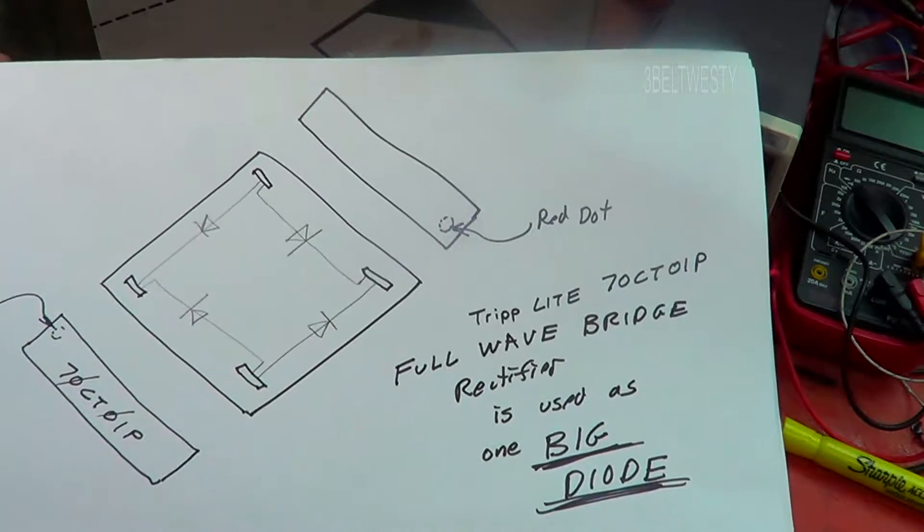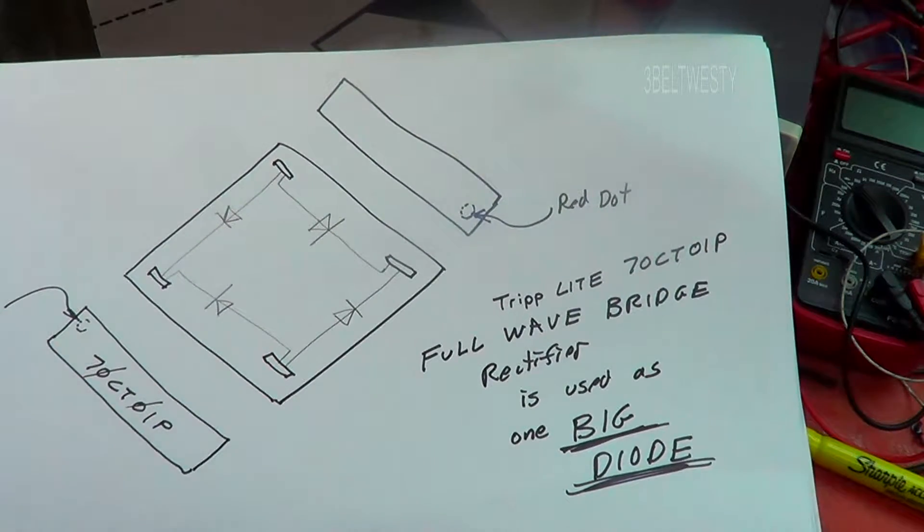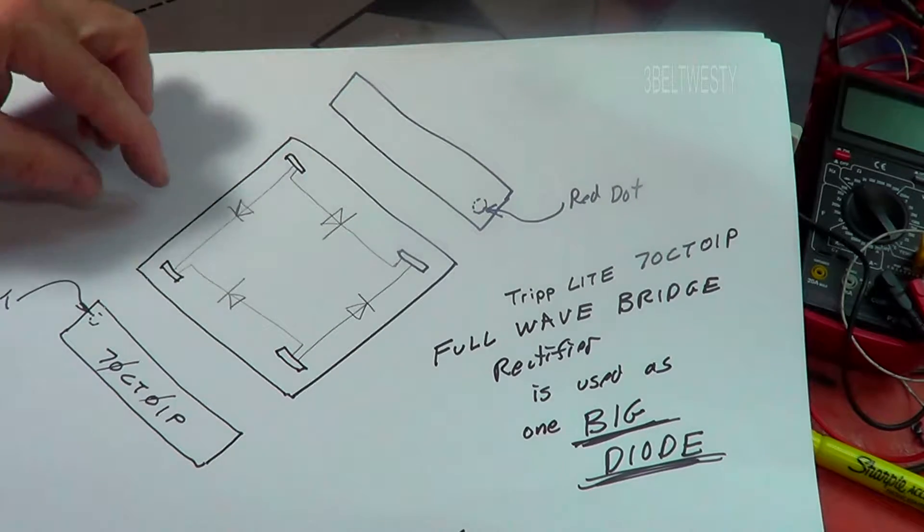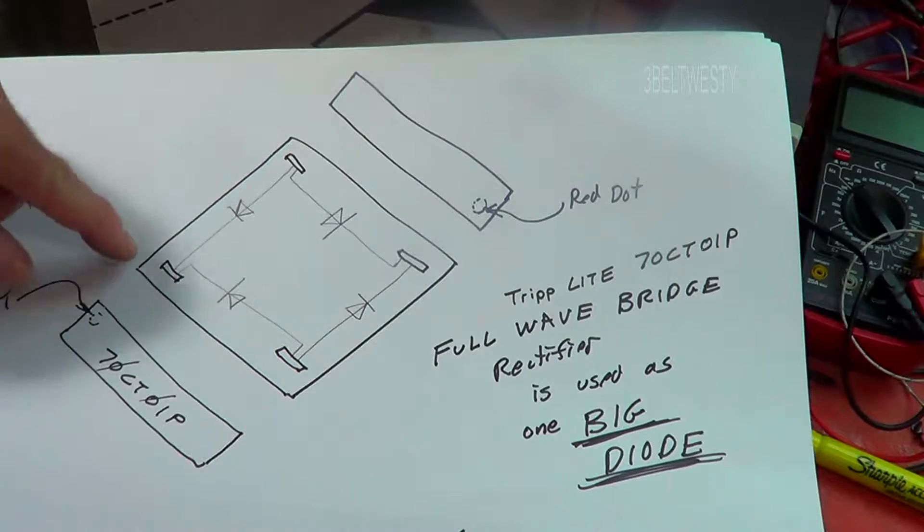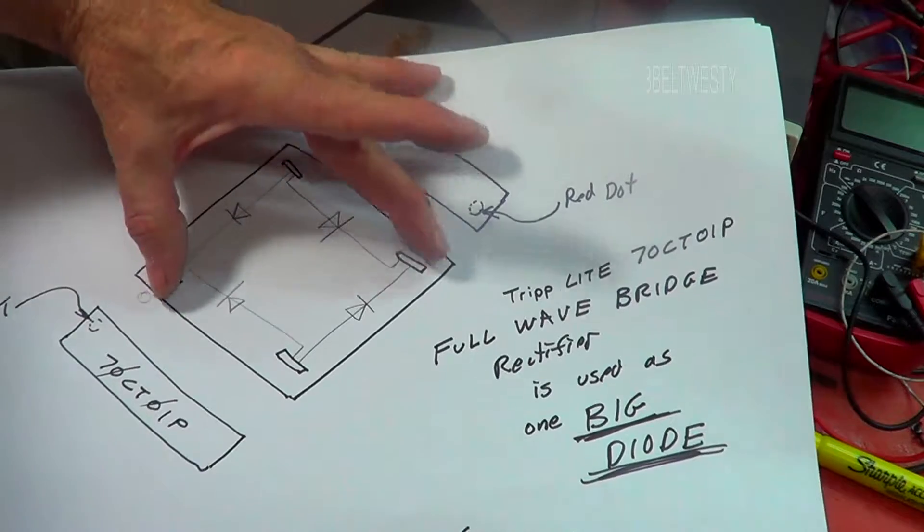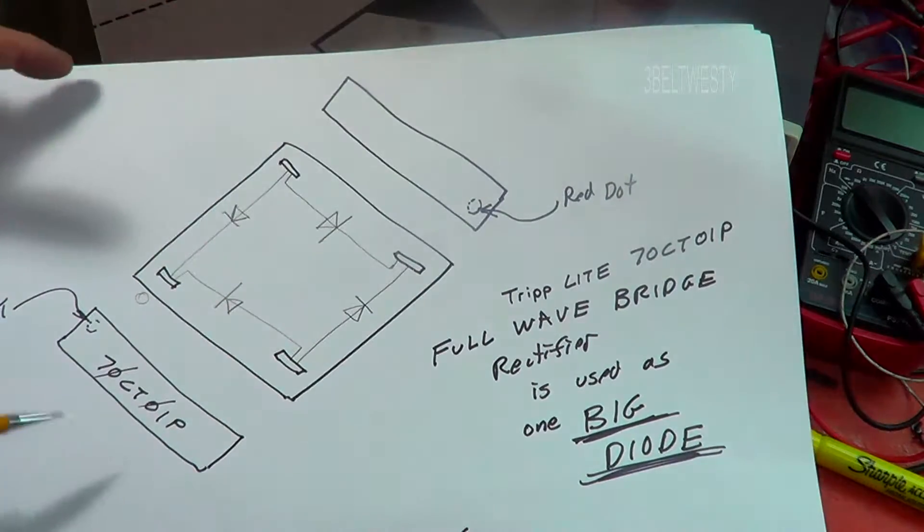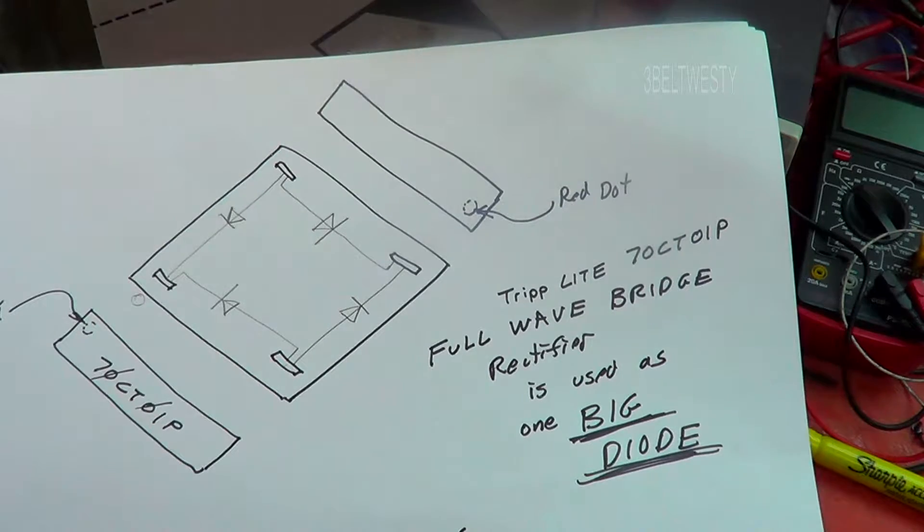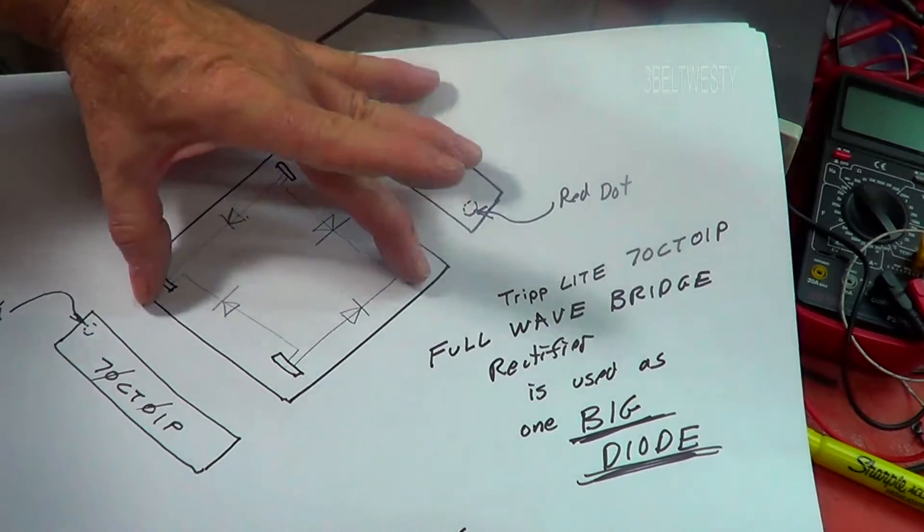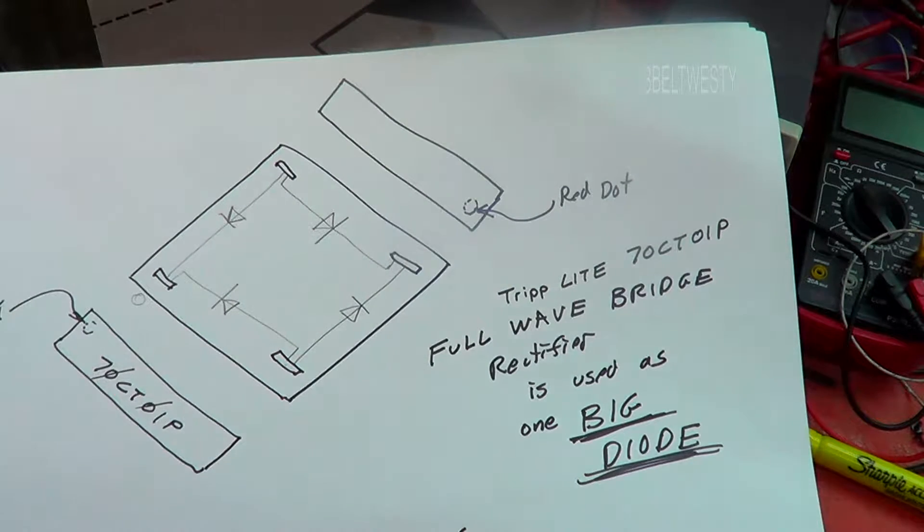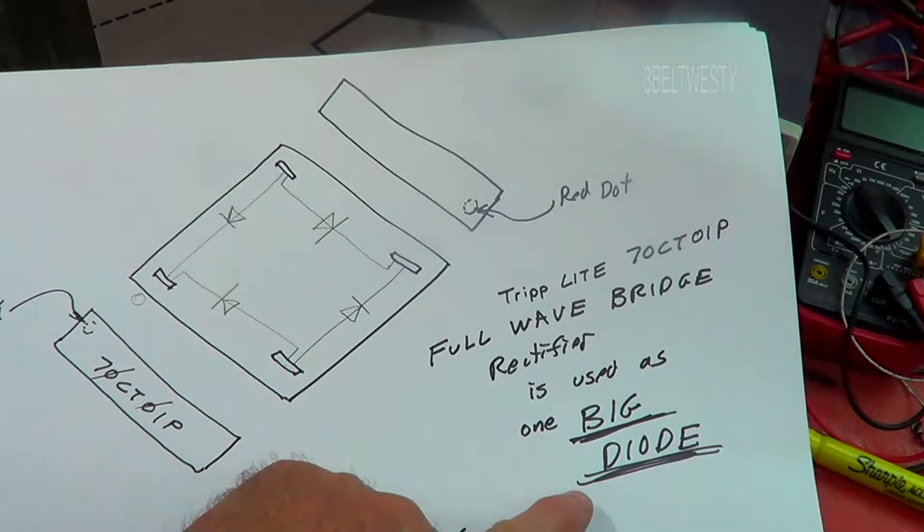I went through and buzzed it out. It's a full-wave bridge. The dots of course are here. This is the output to the red wires connected to these two terminals and it's fed by two blues here. But the two blues are basically in parallel. The two reds are in parallel. It's a full-wave bridge part, but in the schematic it's used as one big diode.